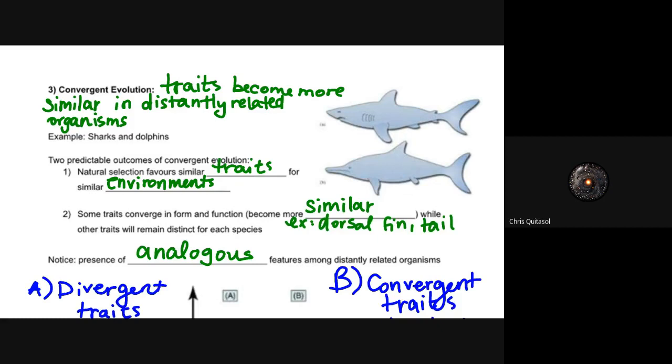When we look at those two predictable outcomes for convergent evolution, natural selection favors similar traits for similar environments. If you think about where sharks and dolphins live, in the ocean and specific lakes and rivers, that environment is very similar for both of these two very different species. As a result of that, those traits that allow for them to be successful in that environment will further be fostered. If you take a look at their dorsal fins and their tails, their gills and their nose shape and structure, and their general shape, you can see the similarities there. Those traits converge in form and function and they become very similar.